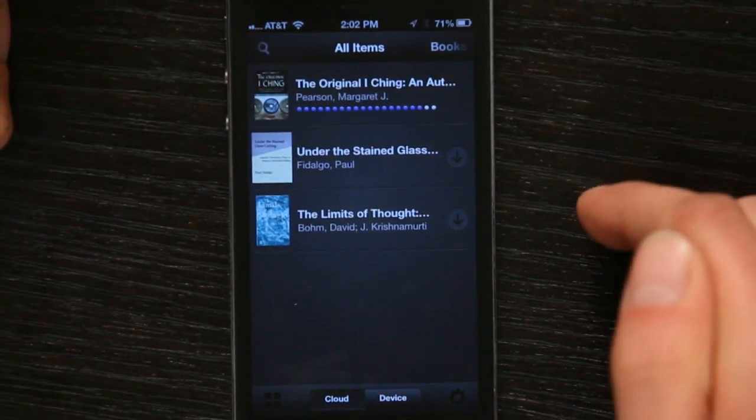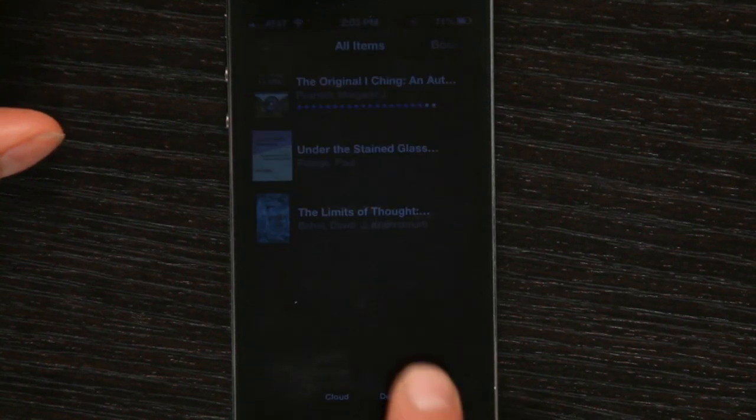Well, if you use something like Kindle, for example, and we're looking at it right here, you see two different things at the bottom. You see cloud and you see device.